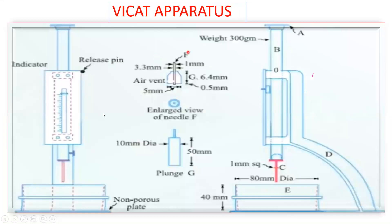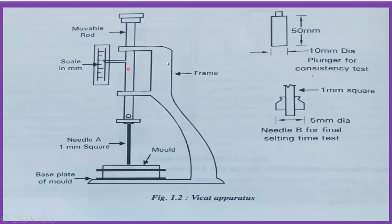This is how the Vicat apparatus looks. We have a mold here — the height of this mold is 40 mm. There is a small pin called the plunger, which is 50 mm in length and 10 mm in diameter. You'll be reading measurements on a scale. There is also a needle of 1 mm square, a base plate, and the mold where we fill the cement paste.